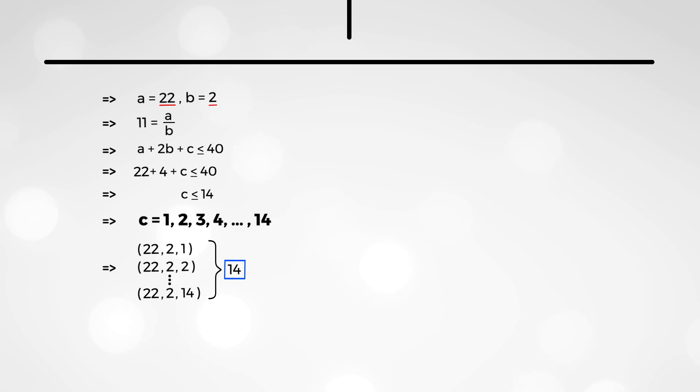Can we find more? Well, let's see. Let's let a equal 33 and b equal to 3. Our first condition is therefore satisfied. And our second condition gives us the following. We've got 33 plus 6 plus c is less than 40. And therefore, c is less than or equal to 1. So, this gives us only one possibility for c, which is just 1. And therefore, only one ordered triple, which is 33, 3, and 1.